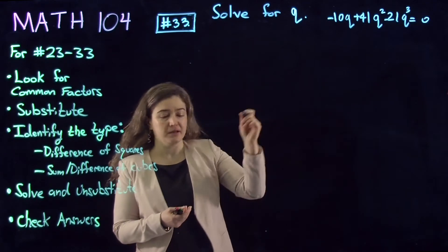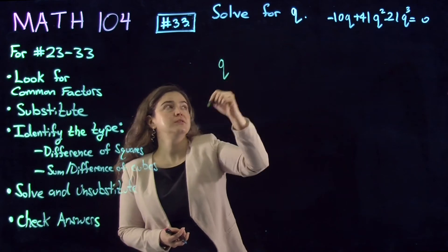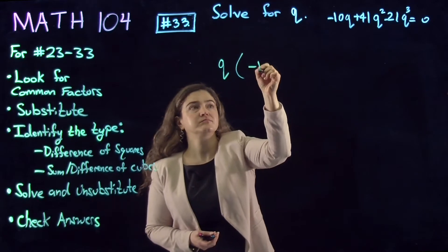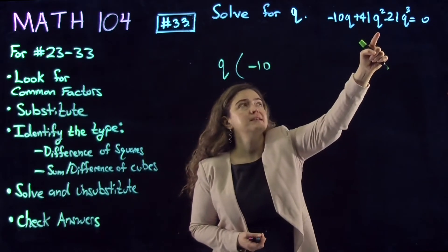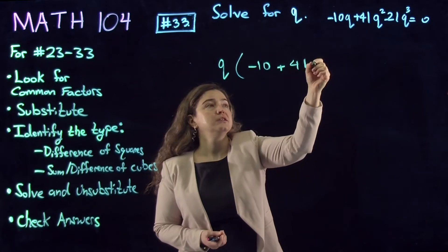So let's factor out q to power 1, which is q. And what is left of the first term is going to be -10. What is left of the second term is going to be +41q, q to power 1 less.